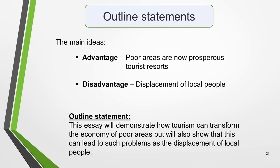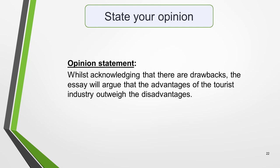Now we need to add a statement where we outline the main points that we'll be covering in the rest of the essay — that is, an advantage of tourism and a disadvantage of tourism. For the advantage I've chosen poor areas and now prosperous tourist resorts, and for the disadvantage I've chosen the displacement of local people. This is one way to develop them into an outline sentence: 'This essay will demonstrate how tourism can transform the economy of poor areas, but it will also show that this can lead to such problems as a displacement of local people.' The question also asks for our opinion, and it's essential that we include it in the introduction. I've decided to argue that the advantages of the tourist industry do outweigh the disadvantages, so this is my opinion statement: 'Whilst acknowledging that there are drawbacks, the essay will argue that the advantages of the tourist industry outweigh the disadvantages.'